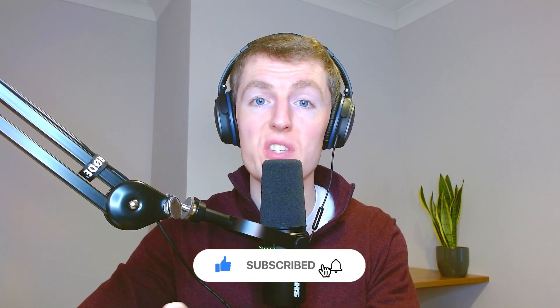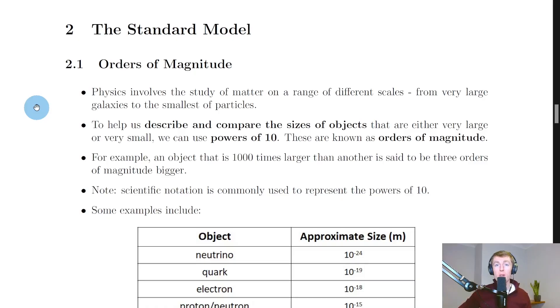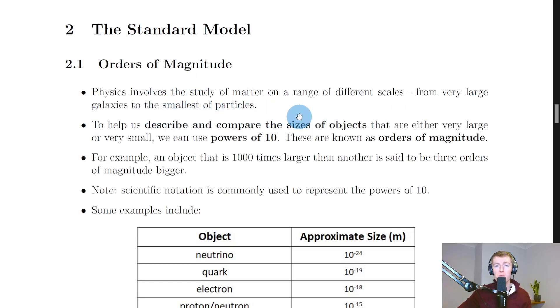Hey guys, Mr. Mitchell here. In this video we're going to kick off the section on the standard model by looking at orders of magnitude. Before we go on and look at what the standard model is, we need to have an appreciation of the size of particles and things in the standard model. Physics involves the study of matter on a range of different scales, from very large galaxies to the smallest of particles. To help us describe and compare the sizes of objects that are either very large or very small, we can use powers of 10, which are known as orders of magnitude.